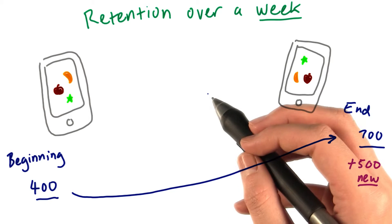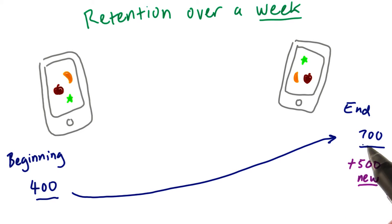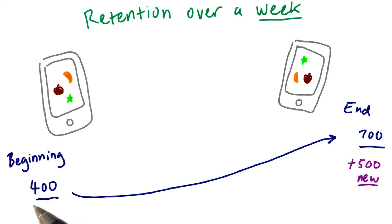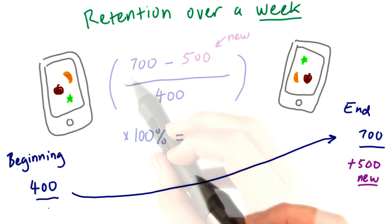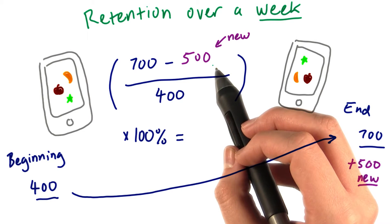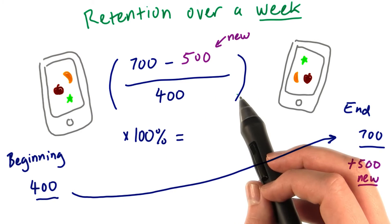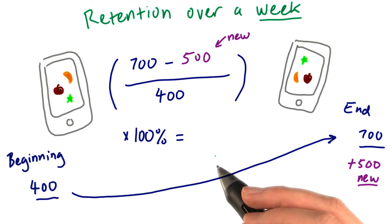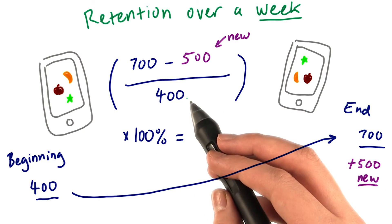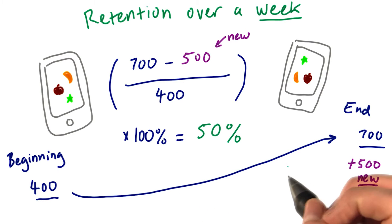So let's look at some numbers for Fruit Ninja. Let's say we had 400 people download the game at the start of the week, and there are 700 total by the end of the week. But we also know that 500 of these people are new — they joined in the middle of the week and aren't part of our 400 original starting players. So we have 700 minus 500 new players, all divided by our 400 original players, then times 100 to get a percentage. This gives us 200 over 400, or half, times 100%, which is 50% retention over this week, which is pretty good.